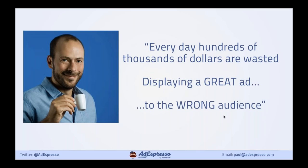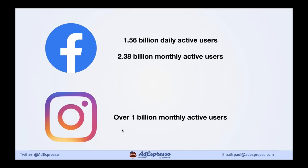So why are we here? This is Massimo, who's the CEO and founder of AdEspresso. He says that every day hundreds of thousands of dollars are wasted displaying a great ad but to the wrong audience — that shows you that targeting is really important. On Facebook now we've got over one and a half billion daily active users, over 2.3 billion monthly active users, and well over a billion on Instagram. So obviously we don't want to be targeting everybody — we want to find that needle in the haystack.